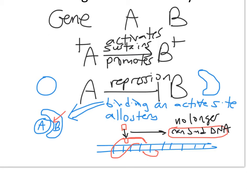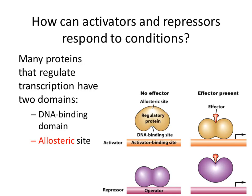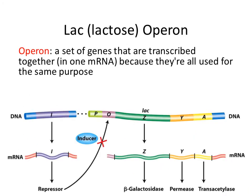Arrows indicate positive interactions between proteins. Blunt arrows mean repression. Allosteric regulation: a small molecule binds a protein and causes it to change shape.